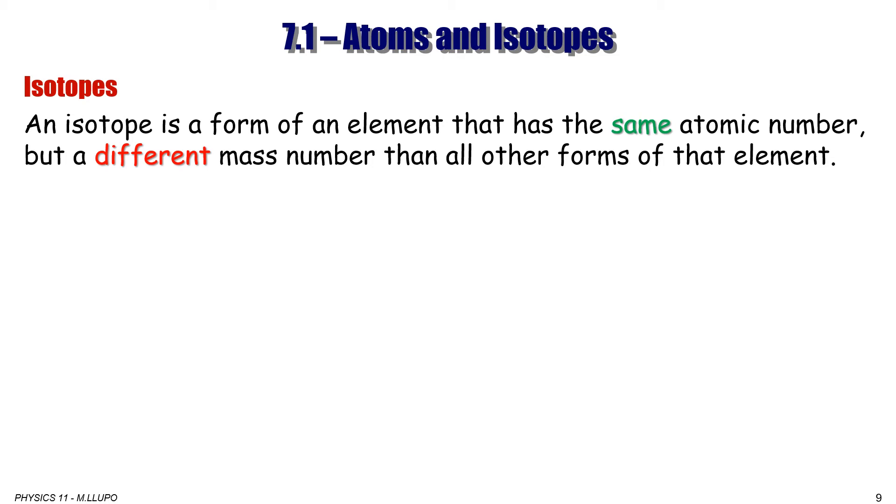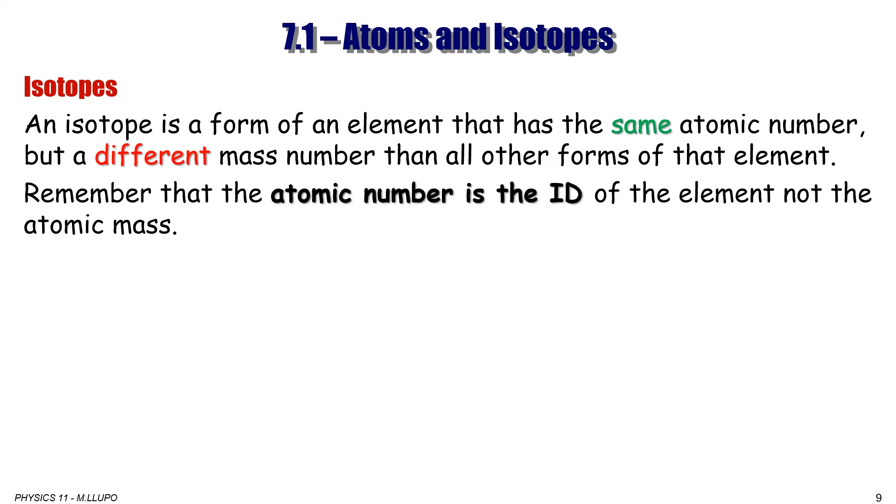The focus of nuclear physics are isotopes. An isotope is a form of the element that has the same atomic number, but a different mass number. Then all are the forms of that same element. So remember, the atomic number, not atomic mass, is the ID of element, is the passport of element, shows which element we are talking about.